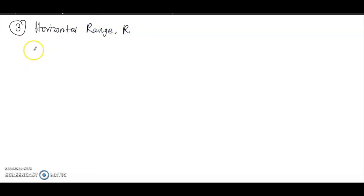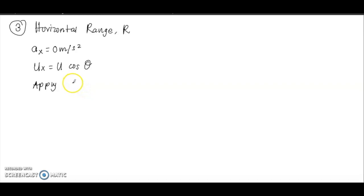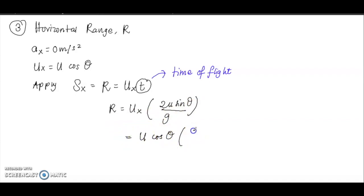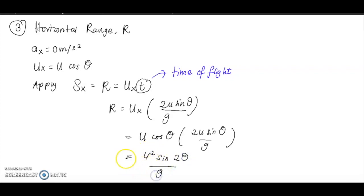Horizontal range is the horizontal displacement of the projectile. Since a_x = 0 and u_x = u·cosθ, we use s_x = u_x·t where t is the time of flight. Substituting T = 2u·sinθ/g, the final equation for horizontal range is R = u²·sin2θ/g.